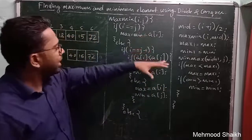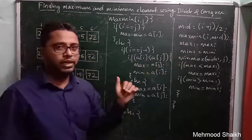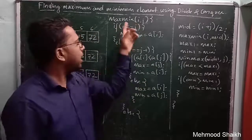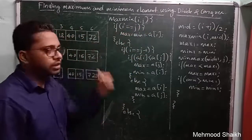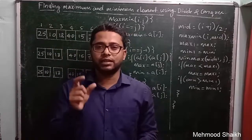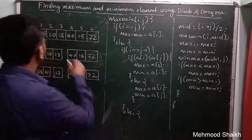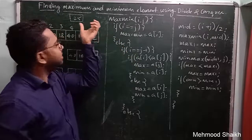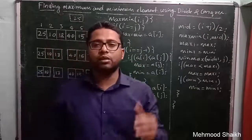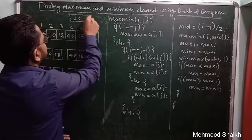We will apply this same concept on this array of size n to find the maximum and minimum element. Initially we have a problem of size n; applying divide-and-conquer makes each sub-problem of size n/2. We further divide those sub-problems into smaller ones. The algorithm is a function maxMin which takes two parameters i and j.